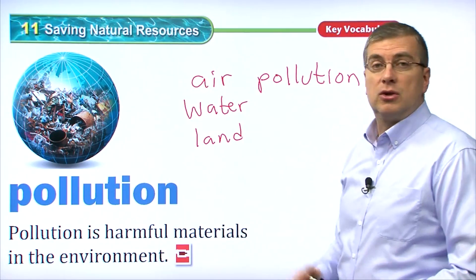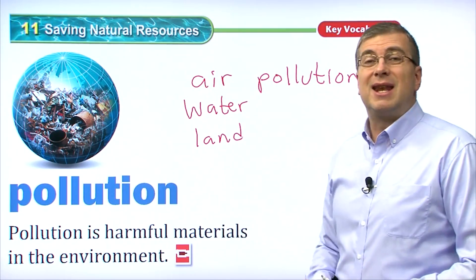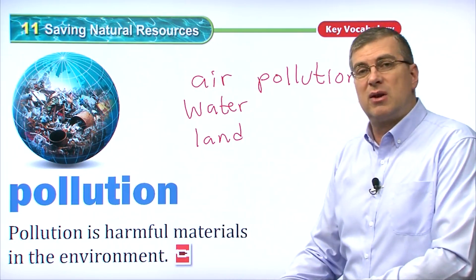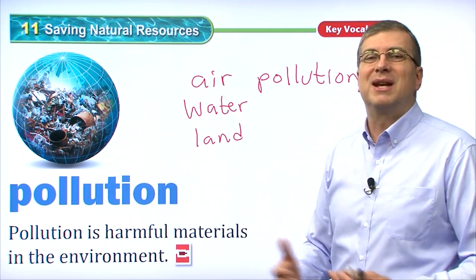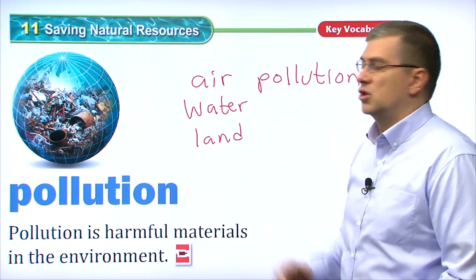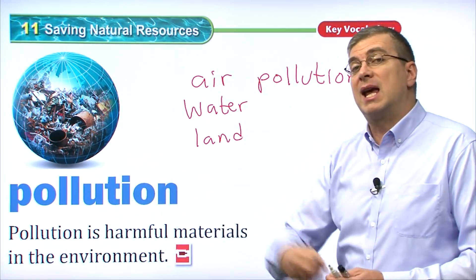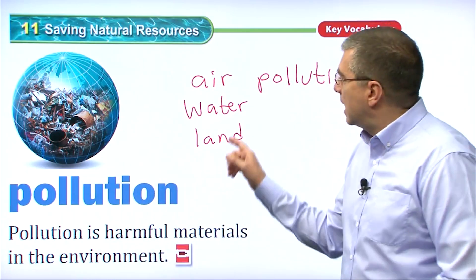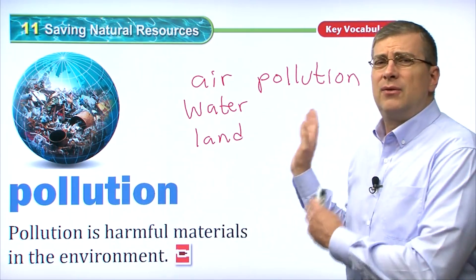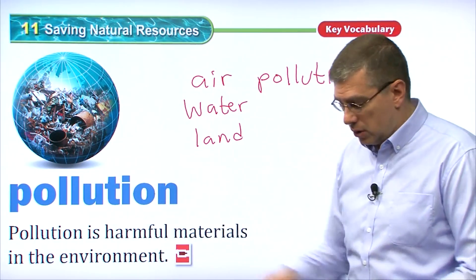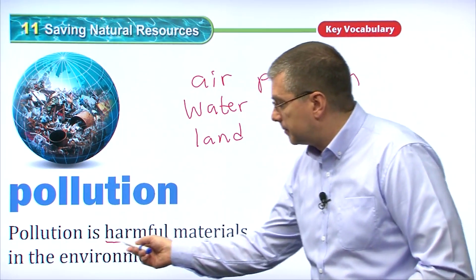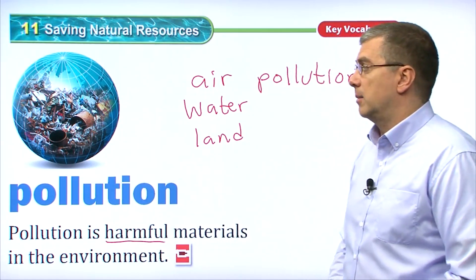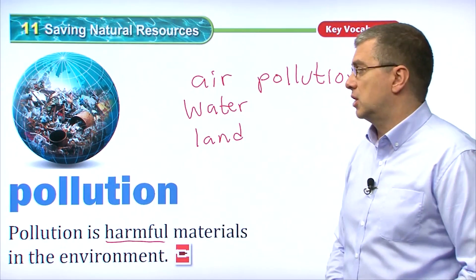If we burn things, the smoke goes into the air — that causes air pollution. If we spill or throw chemicals into the water, we can't drink that water; it becomes dirty — that's water pollution. And if we throw our cans and plastic bottles on the ground without caring, that's land pollution. We have to avoid pollution because it is harmful to us.